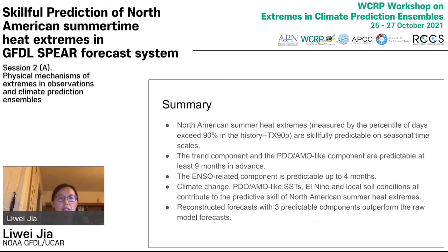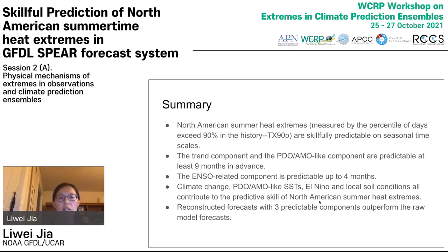To summarize: North American summertime heat extremes are predictable on seasonal time scales. The trend component and the AMO/PDO-like component are predictable for at least nine months, while the ENSO-related component is predictable up to four months. We conclude that climate change, PDO and AMO-like SSTs, El Niño, and local soil moisture all contribute to the predictive skill of North American summer heat extremes. The reconstructed forecast with three predictable components outperforms the raw model forecast. Thank you very much.